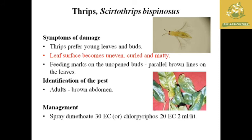The next pest is thrips, with the scientific name Scirtothrips bispinosus. The symptom of damage: thrips prefer to affect young leaves and buds, causing an uneven and curly metal-like leaf surface. The identification: adults are brown in color with a brown abdomen. Management: spraying of dimethoate or chlorpyrifos at the recommended dosage of 2 ml per liter.